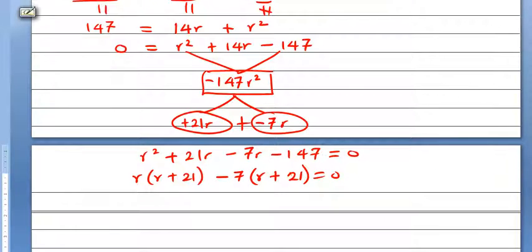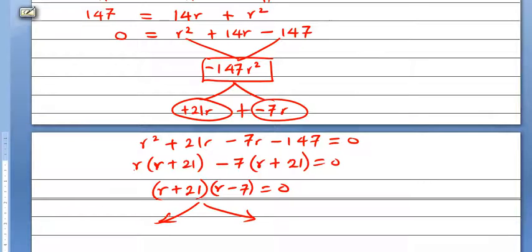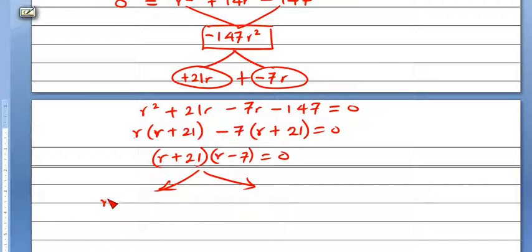r is common here, r plus 21. Minus 7 is common here. So r plus 21 is common. Let's bring it out. r plus 21. It now remains this minus 7. r minus 7 is 0. So which means there could be two answers. We could have r plus 21 is equal to 0, or we have r minus 7 is equal to 0.